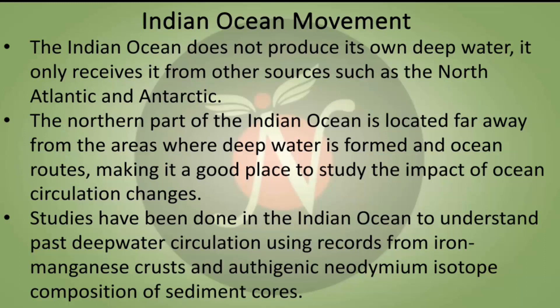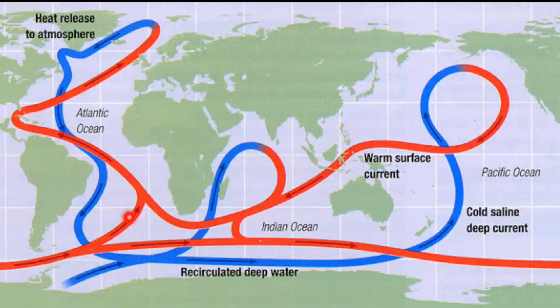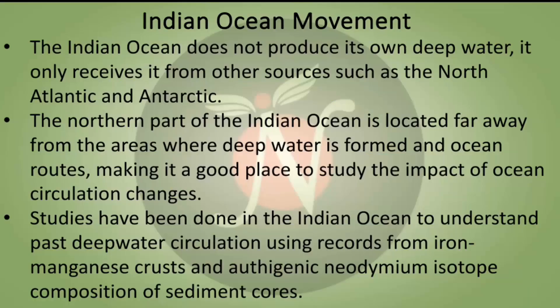Now we will see Indian Ocean movement. The Indian Ocean does not produce its own deep water; it only receives it from other sources such as the North Atlantic and Antarctica. The northern part of the Indian Ocean is located far away from the areas where deep water is formed, making it a good place to study the impact of ocean circulation changes. Studies have been done in the Indian Ocean using records from iron-manganese crusts and authigenic neodymium isotope composition of sediment cores.